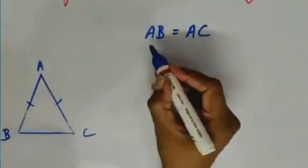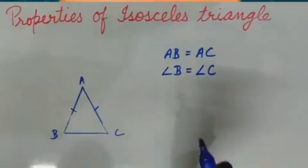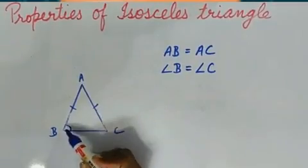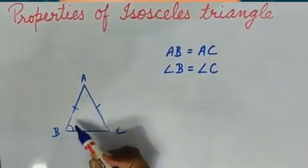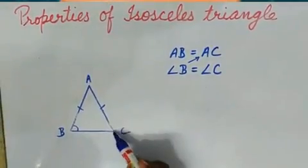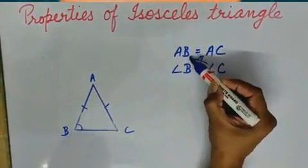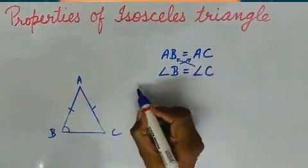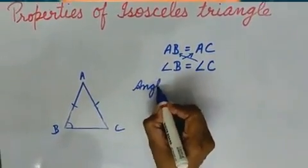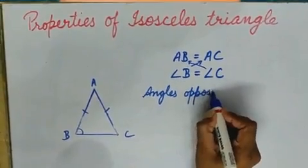Angle B is equal to angle C. We can see angle B is opposite to AC and angle C is opposite to AB. This means angles opposite to equal sides are equal in an isosceles triangle.